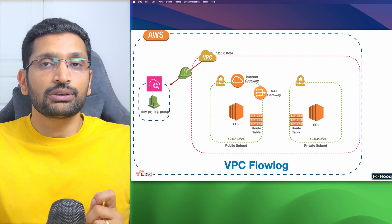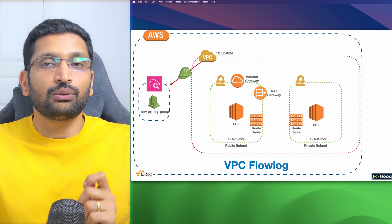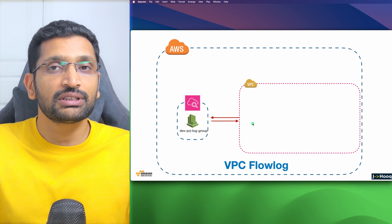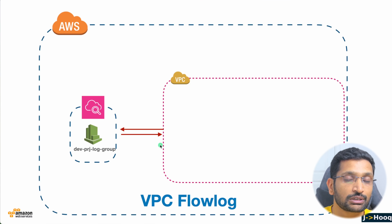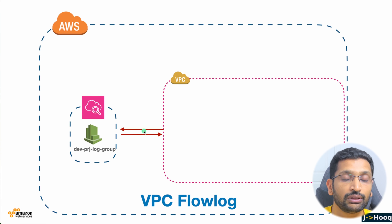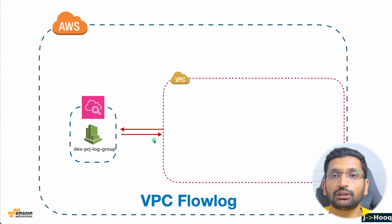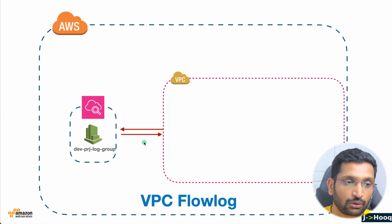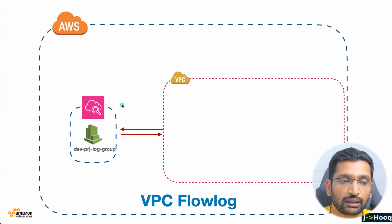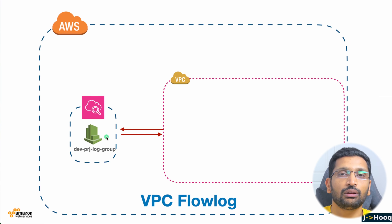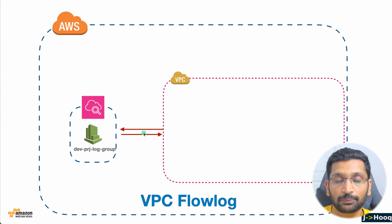So there is a lot to cover, but let's focus on what VPC flow log actually is. The VPC flow log is responsible for capturing all the traffic going out and coming in within our VPC, and this traffic can be captured using the CloudWatch log group. Here we are going to see all the logs coming in and going out of our VPC.